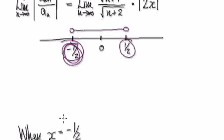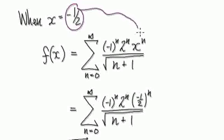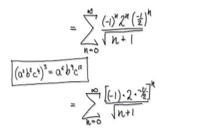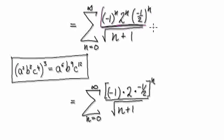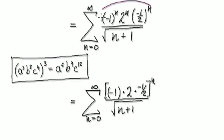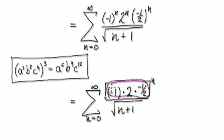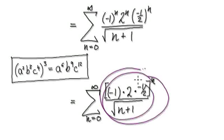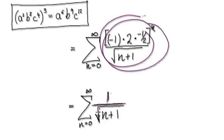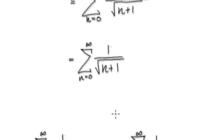Let's look at negative a half first. When x is negative a half, we put it into our original series. That gives us this expression. Tidying it up: if you look at this part, remember multiplying 3×2, 3×3, 3×4 gives you a product. The key point is that multiplying all three terms together gives you 1. So this whole thing becomes 1 to the power of n, which is just 1. So the whole expression reduces to 1 over the square root of (n+1).